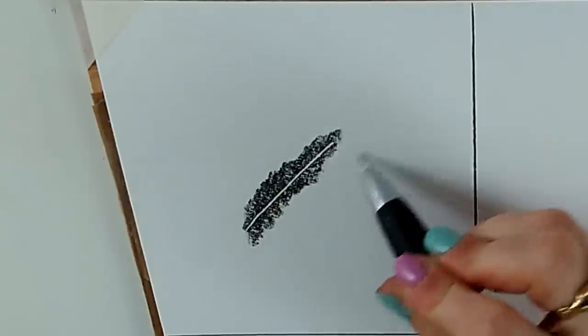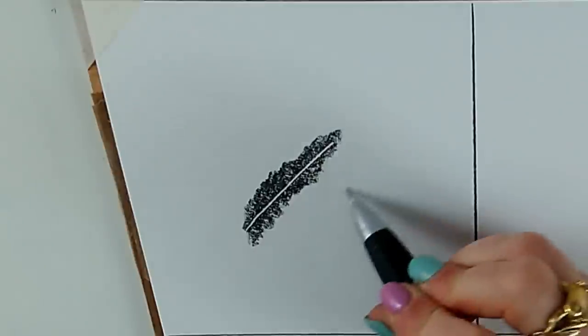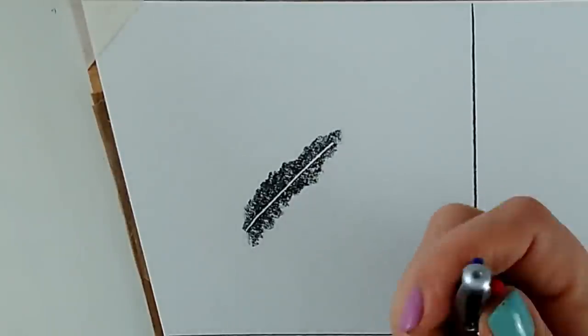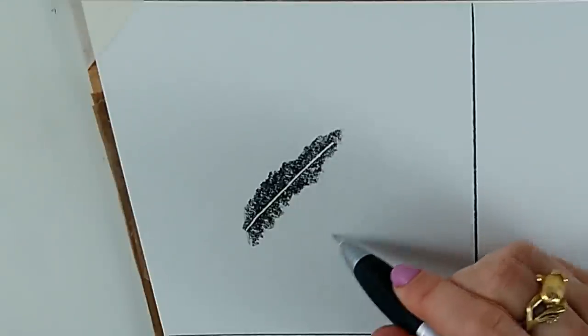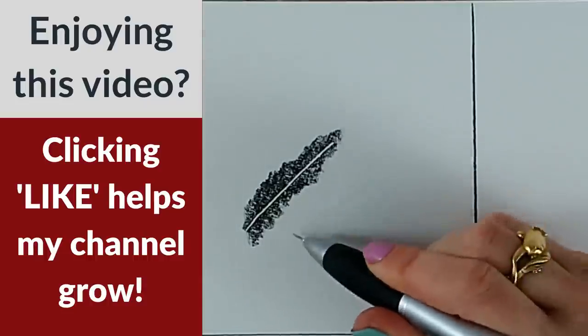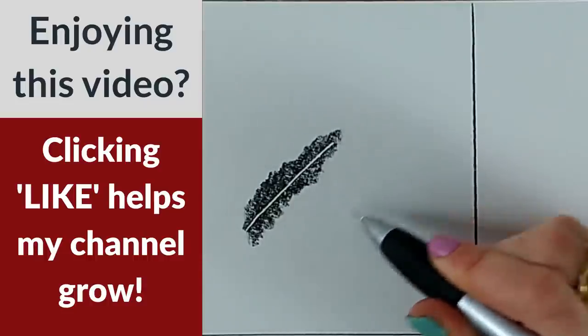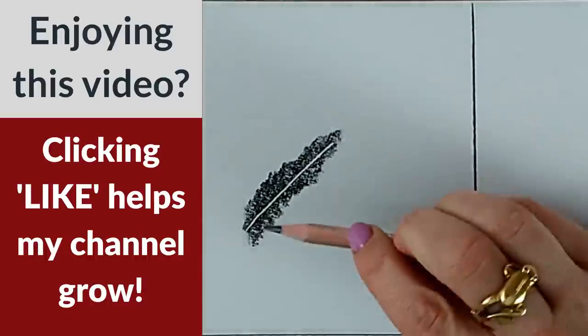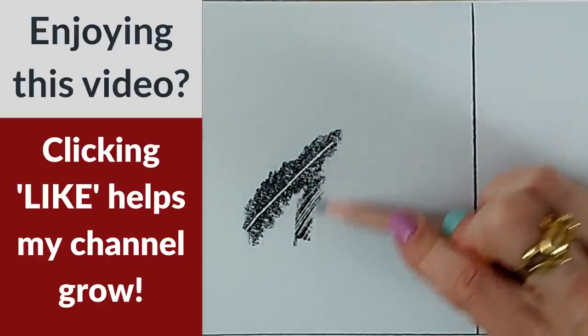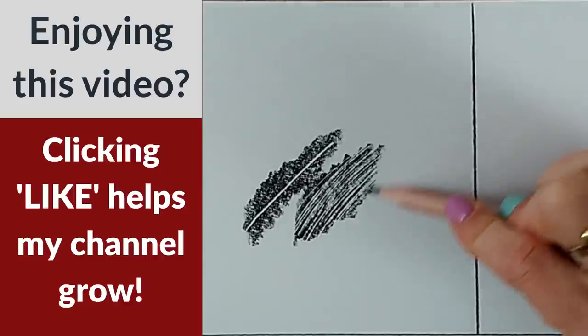So you can imagine if we're doing something like fur. And we're going to go a little bit more sketchy. And maybe I'll make some different size marks as well. There's a much thinner one there. And let's try again, going across the top. Look at that. Look at the natural effect we get there.